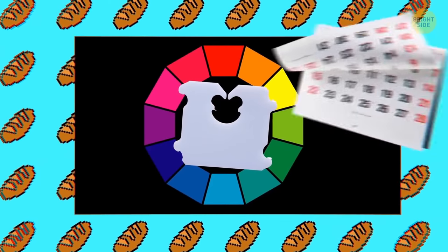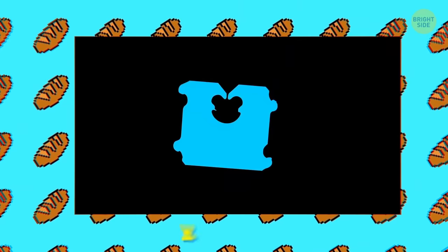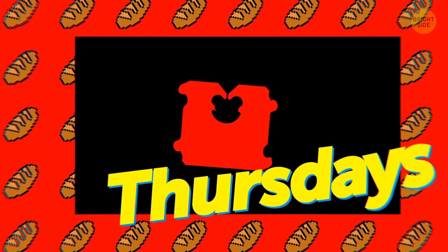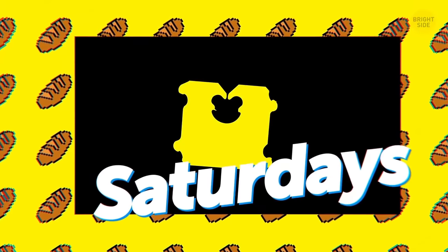Those different colored bread tags use a color-coded system to show the day that they were baked. They are usually blue tags for Mondays, green tags for Tuesdays, red tags Thursdays, white tags Fridays, and yellow tags for Saturdays.